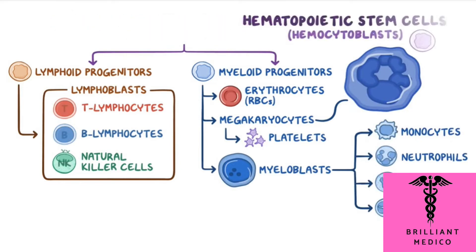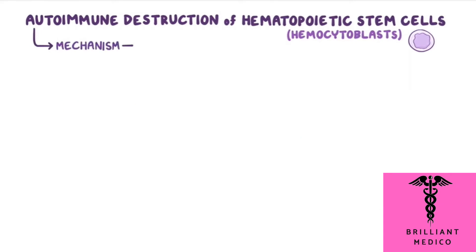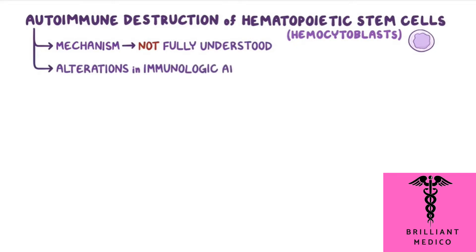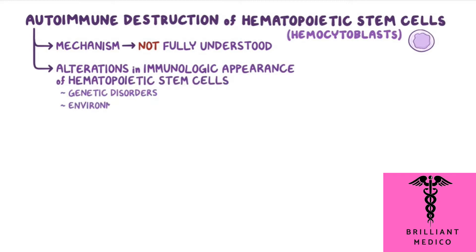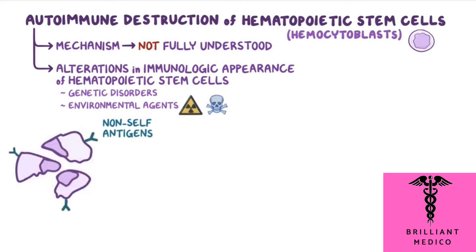The most common cause of aplastic anemia is autoimmune destruction of the hematopoietic stem cells. The details of this mechanism are not fully understood. Research shows that there are alterations in the immunologic appearance of the hematopoietic stem cells because of genetic disorders, or after exposure to environmental agents like radiation or toxins. This means that the hematopoietic stem cells start expressing non-self-antigens, and the immune system subsequently targets them for destruction.